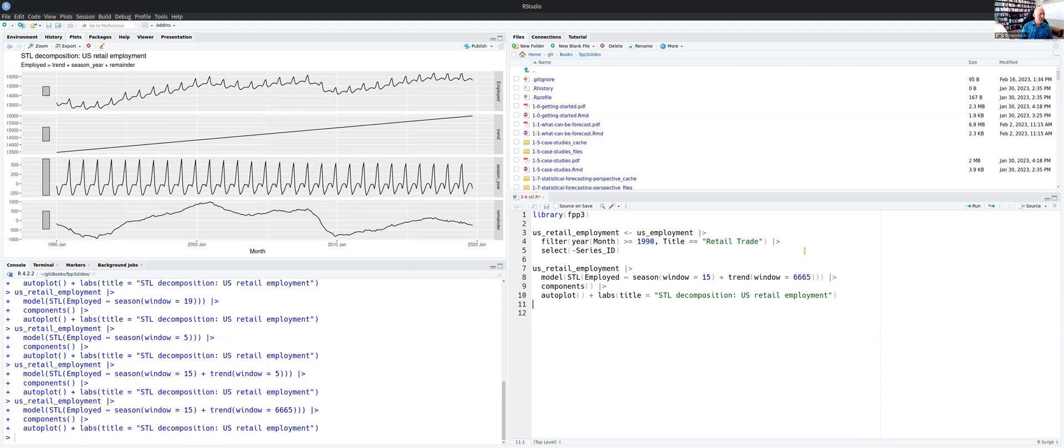Then the trend becomes a straight line. But then you get the remainder looking strange because what should have gone into the trend is no longer captured by the trend because this window is too big. And so it ends up in the remainder.